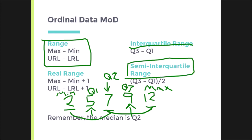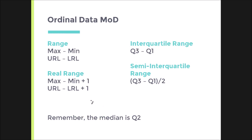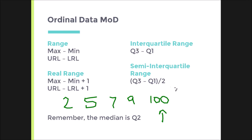So why are those useful — why not just the range? What if I took those same numbers and changed one number — only the most extreme score, the maximum? Notice the median is still 7, but the range is now very different: the range is 98 and the real range is 99. So it seems like this data is really spread out and people vary greatly around 7.